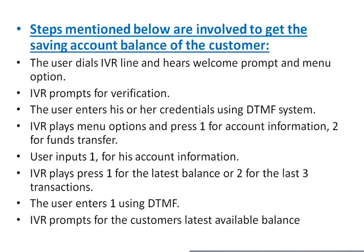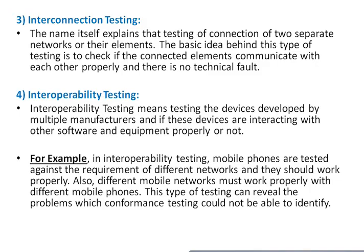Steps to get a savings account balance using IVR: The user dials the IVR line and hears a welcome prompt and menu options. The user enters credentials using DTMF. The IVR presents menu options: press 1 for account information, 2 for fund transfer. The user inputs 1 for account information. The IVR then presents: press 1 for the latest balance, 2 for fund transfer, 3 for last three transactions. The user presses 1, and the IVR provides the latest available balance.